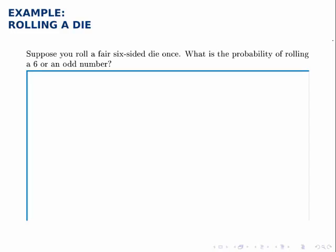Suppose you roll a fair six-sided die once, what is the probability of rolling a six or an odd number? There are a couple of ways to do this problem, and I'll do two.